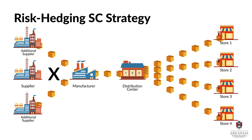By adding additional sources of supply, managers spread out the potential risk of supply disruptions. The more sources of supply that you have, the less risk you have.